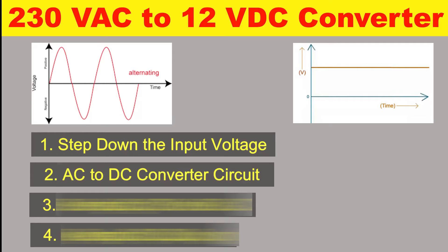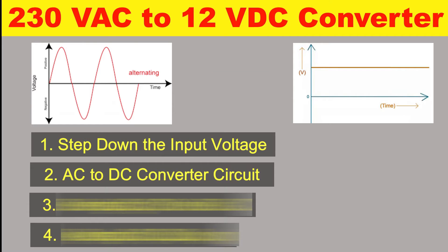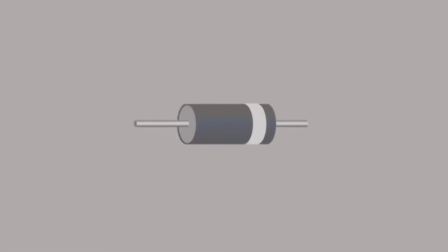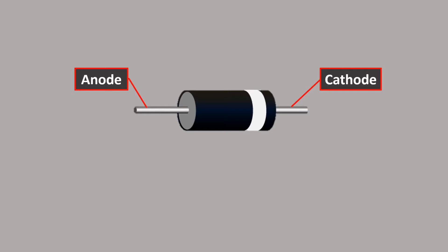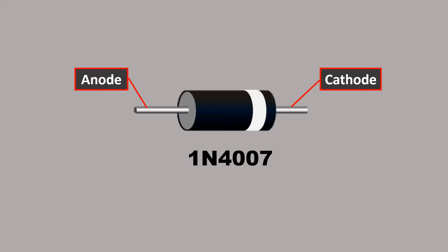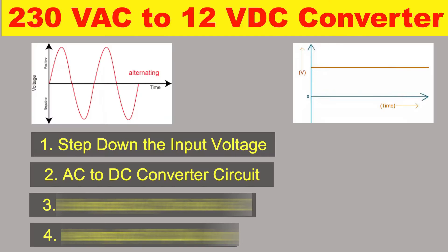The second step is to convert the 12 volt AC power supply we now have into DC power supply. To convert AC into DC you have to use diodes. The circuit I am going to explain is a bridge rectifier, which requires a total of four diodes, all of the same model number. Let's do the connection of the transformer and diodes, and after that we will understand the further process.